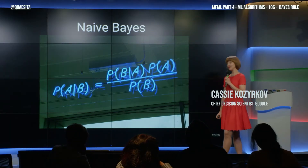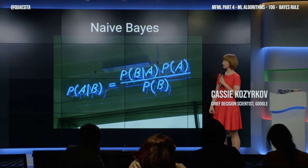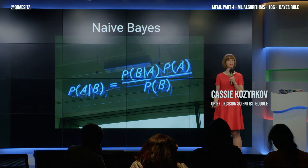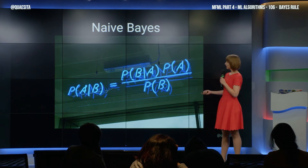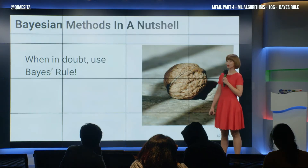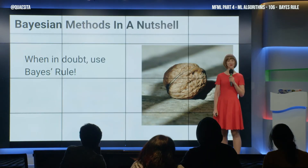Alright, what is naive Bayes? What are Bayesian methods in general? They summarize to this: when in doubt, use Bayes' rule.